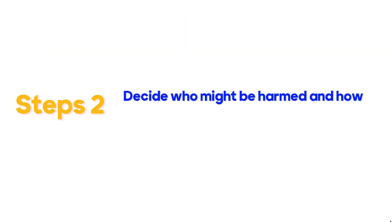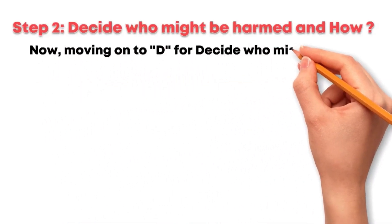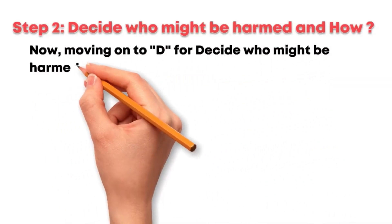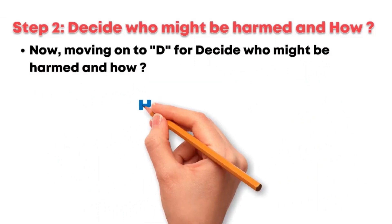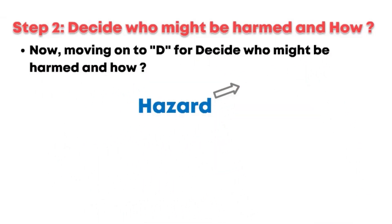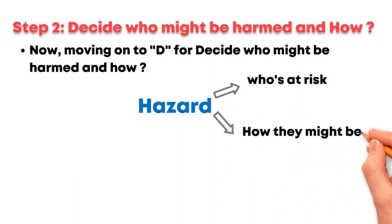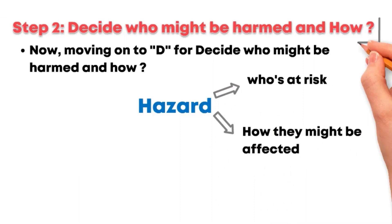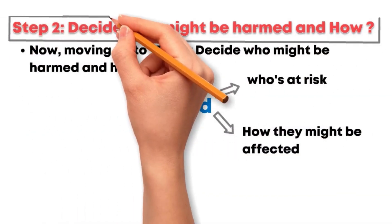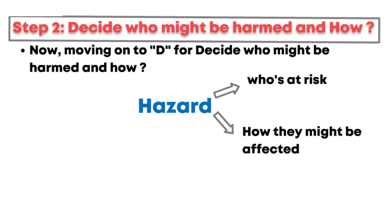Step 2: Decide who might be harmed and how. Moving on to D for decide who might be harmed and how. It's not enough to know the hazard — we need to understand who's at risk and how they might be affected. This step ensures we're taking a comprehensive approach to safety.